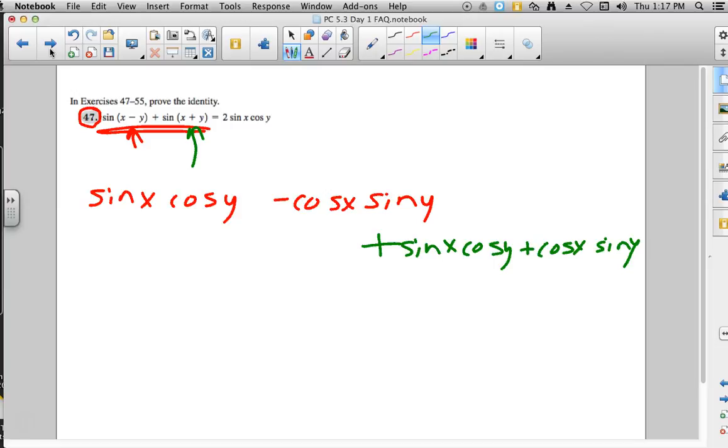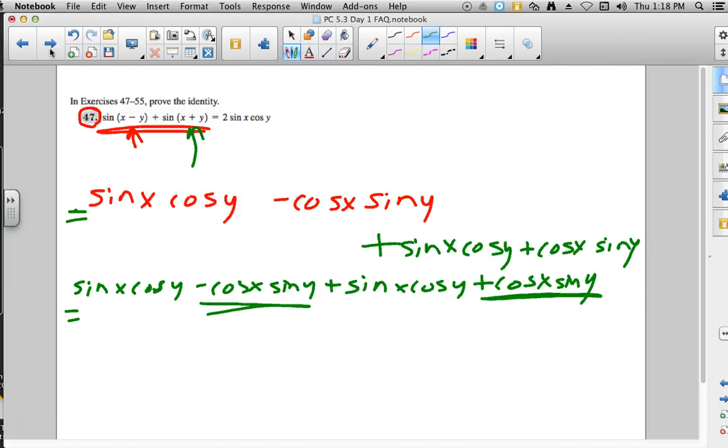So let's see what we have here. We have sine of x cosine of y minus cosine of x sine of y plus sine of x cosine of y plus cosine of x sine of y.